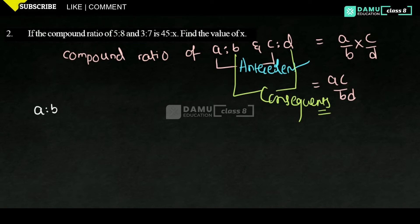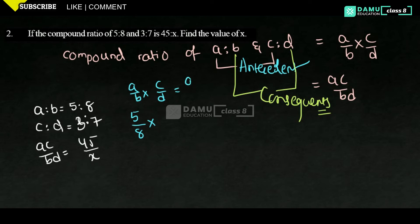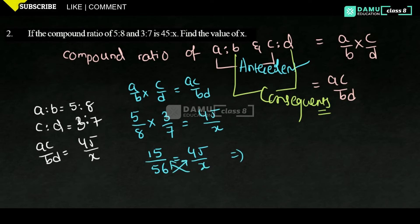Let A is to B equal 5 is to 8, and C is to D equal 3 is to 7. Then AC by BD equals 45 by X. So 5 by 8 into 3 by 7 equals 45 by X. That gives 15 by 56 equals 45 by X. Cross multiplying, 15X equals 45 into 56. Then X equals 45 into 56 by 15.